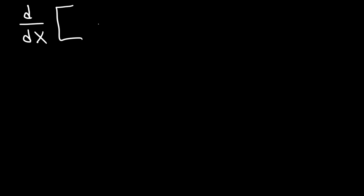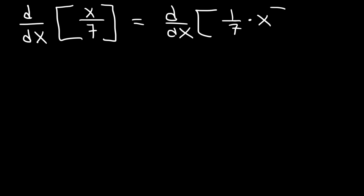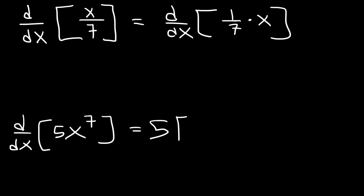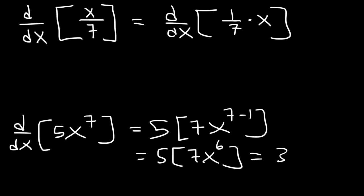What is the derivative of x divided by 7? We have a fraction — a variable divided by a constant. If you're confused, you just have to see it from a different perspective. This expression is equivalent to 1 over 7 times x. So now it's very similar to the previous problems. For example, the derivative of 5x to the seventh power uses a constant times a variable. That would be 5 times 7x raised to the 7 minus 1, which is 5 times 7x to the 6, and 5 times 7 is 35.